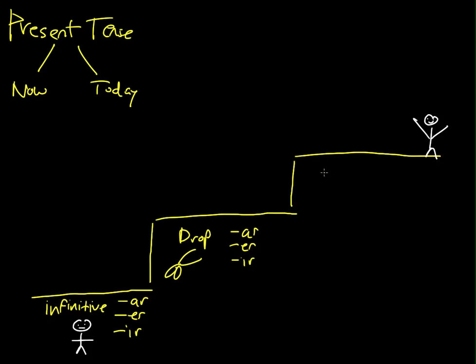And the last step up this mountain is to add our present tense endings. And so here's an addition sign. So add the endings. Now let's start off with our first infinitive.